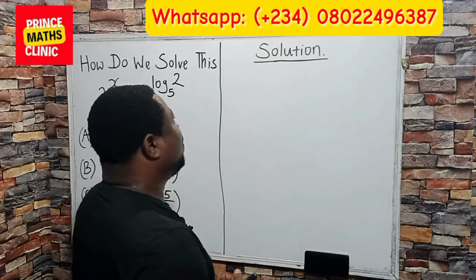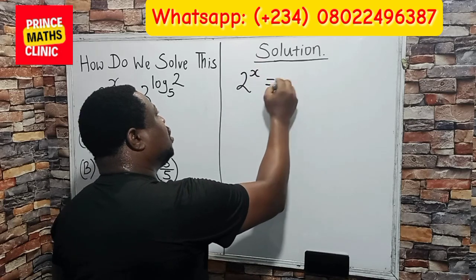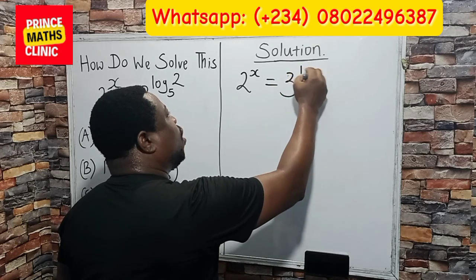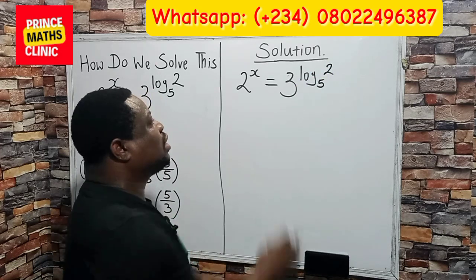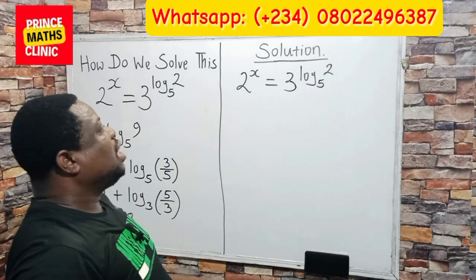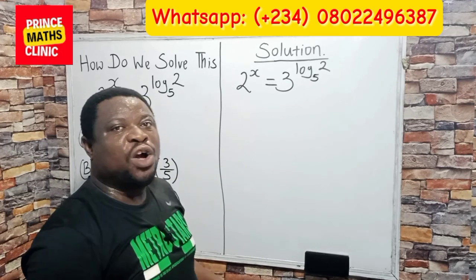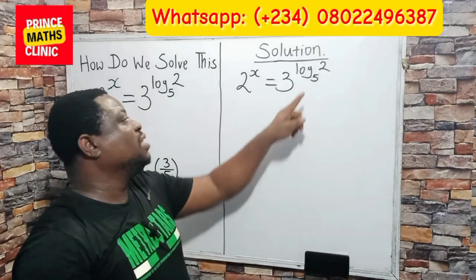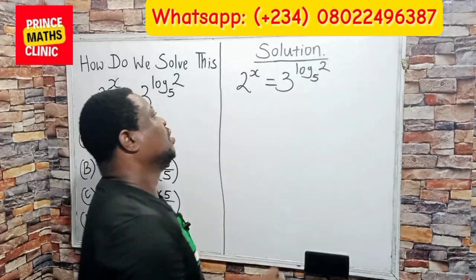We are given that 2 to the power of x is equals to 3 to the power of log 2 in base 5. The first thing to do when we are confronted with a challenge like this is to take the log of both sides. I want to take the log of both sides in base 5, because the base here is 5.